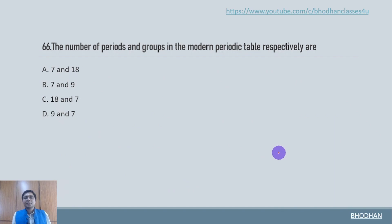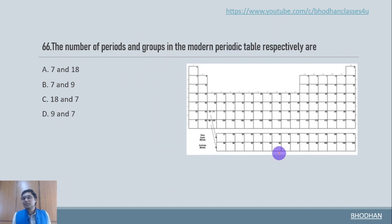Number of periods and groups in a modern periodic table, respectively. So here is the outline of modern periodic table. If you carefully observe, these are periods. One, two, three, four, five, six, seven. And these are groups. One, two, three, four, five, six.